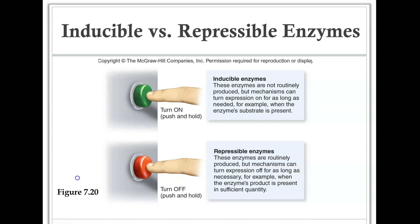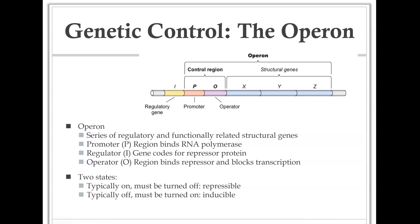So how do bacteria actually control this? They use a system called an operon — the way the gene itself is organized. An operon contains two basic regions: a control region and the actual genes themselves. This particular operon encodes for three different genes — gene X, gene Y, and gene Z — and the control region regulates whether RNA polymerase can bind and transcribe them.